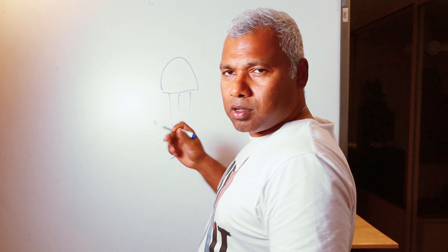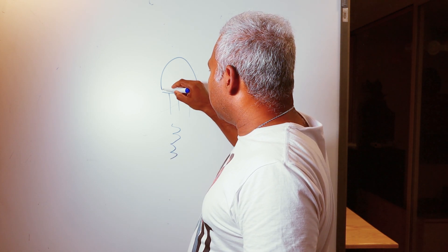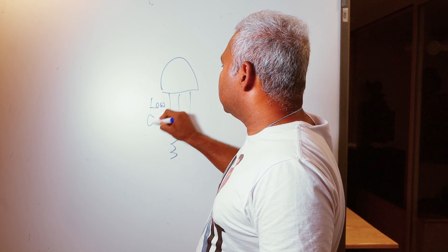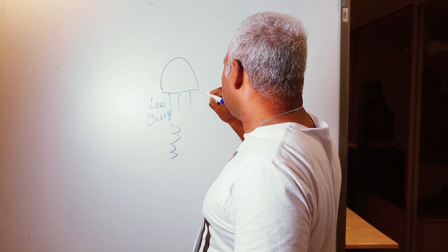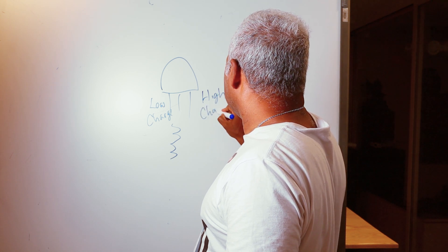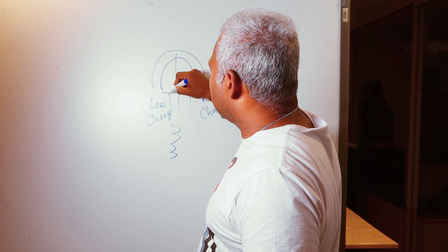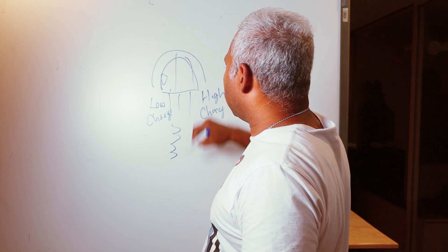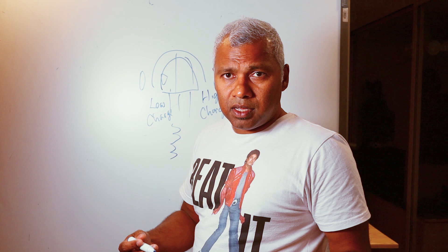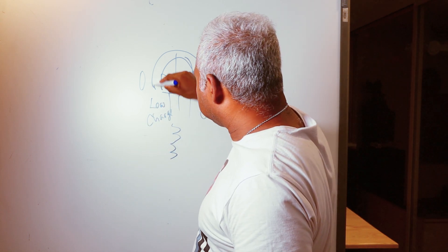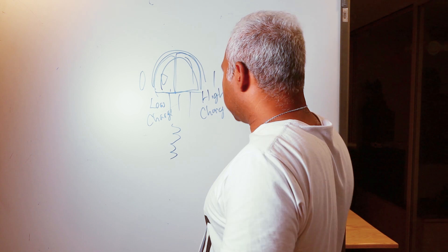The transistor has a weak voltage, so the current will be given by the maximum electricity voltage. You can see the high charge and the low charge. If you have a transistor with a low charge, then you have a transistor with a high charge.